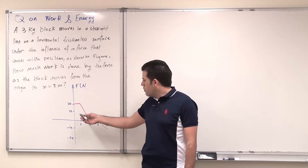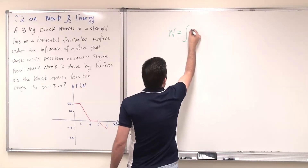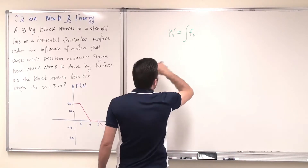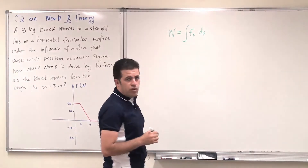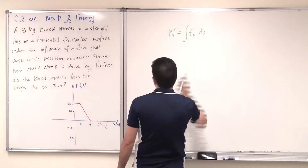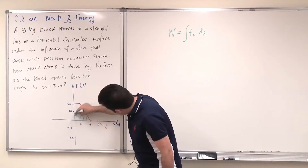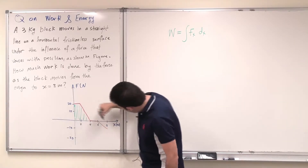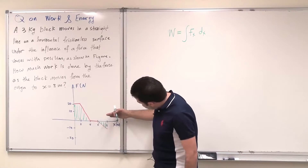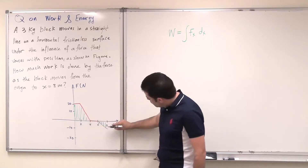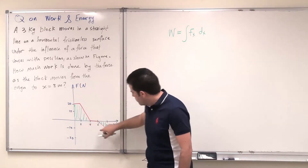For work done by a varying force, the equation is the integration, or the area under the curve. Since the force is a horizontal force, one dimensional, it is the area under the curve of the force multiplied by the distance. I need to find this area under the curve from zero to eight. This area is negative because it is below the reference where the force is zero.